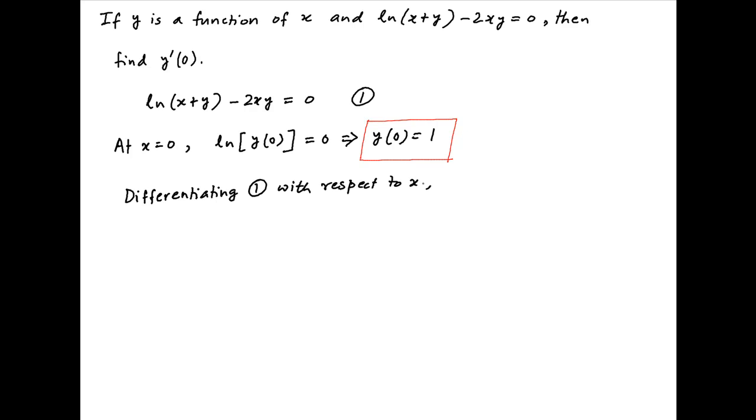We get 1/(x+y) times (1 + y') - 2 times (y + xy') = 0.